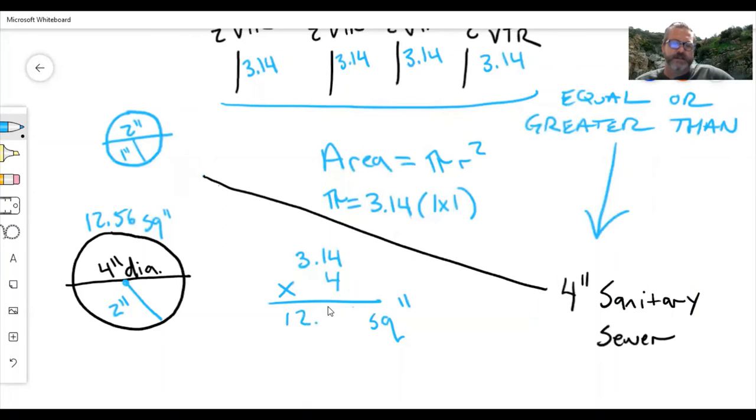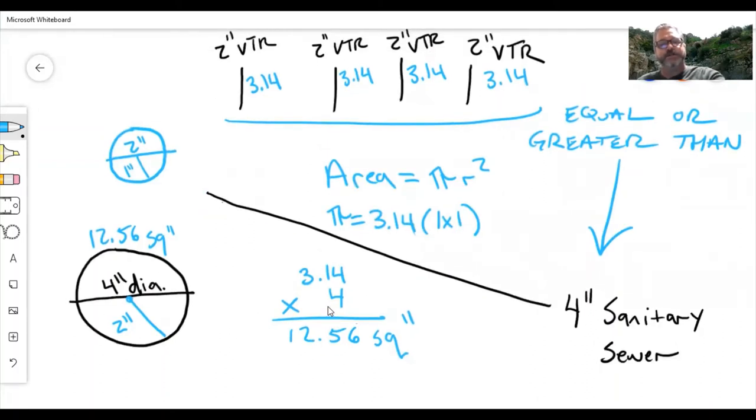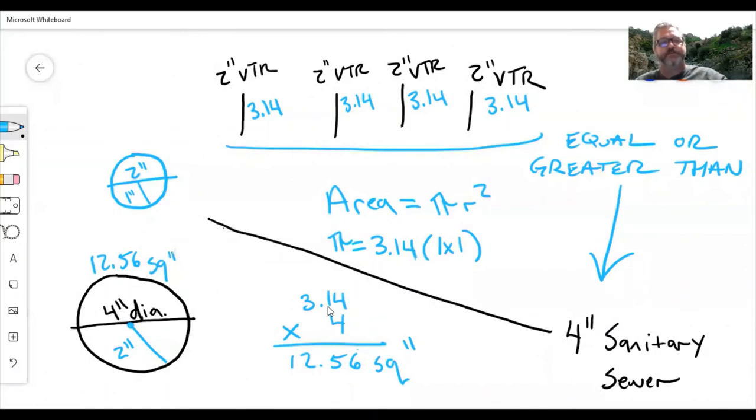Zoom in for effect on this. Oh my god, look at that: 12.56 square inches. So for a four-inch sanitary sewer line, I can run four two-inch vents through the roof.